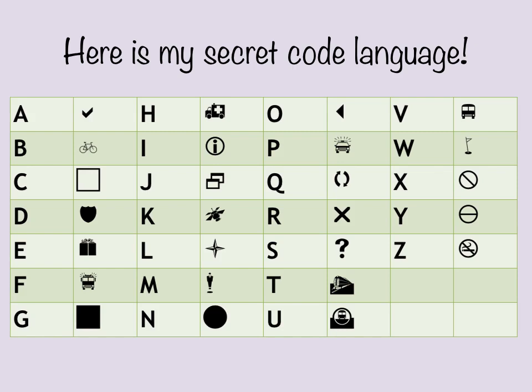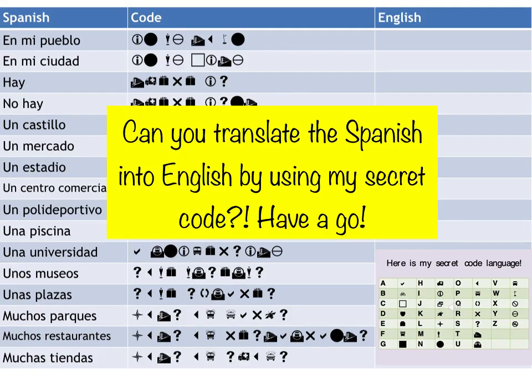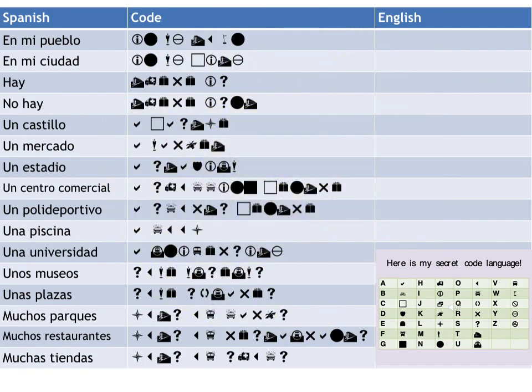This is my secret code language. For every letter of the alphabet there's a picture or symbol. You're going to use this code to try and translate the Spanish places in town into English on the next slide. Can you translate the Spanish into English by using my secret code? Have a go. Here's the secret code language again in the bottom right-hand corner. Write down your answers in your book or on your paper.